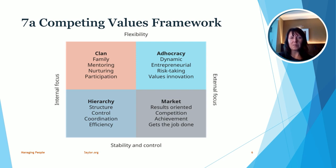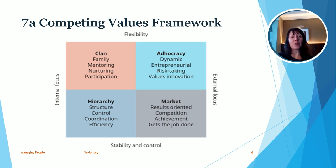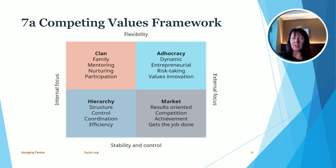On the bottom we have stability and control, which refers to how stable the industry is and how important control is within the organization. The opposite of that is flexibility at the top. On the left we have an internal focus, meaning the company is focused internally, versus an external focus where they may be focused more on markets or the external environment. The clan culture has an internal focus and flexibility, which tends to create a family-oriented environment with a lot of mentoring, nurturing, and participation. Oftentimes small startup organizations have this kind of culture because they need to be flexible as they start up and learn how the business should run.